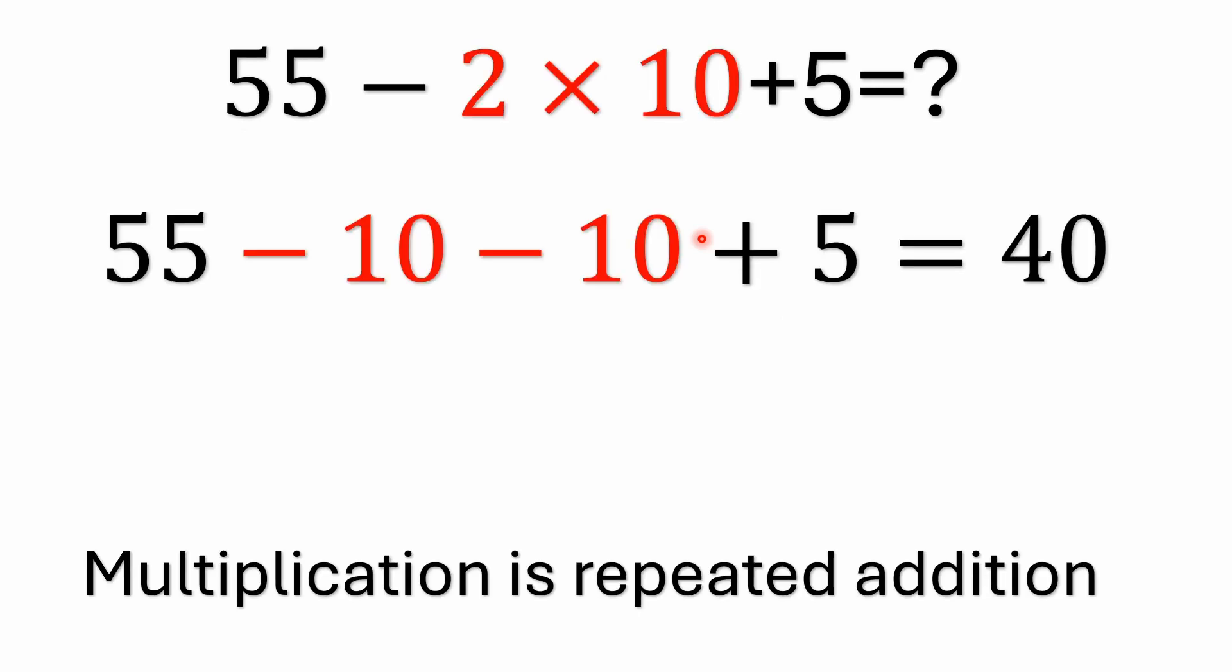Now you could take this problem and substitute the 2 times 10 right? Minus 2 times 10 is the same as subtracting 10 twice in this case. So minus 2 times 10 is the same as minus 10 minus 10. If you substitute the multiplication with the equivalent addition, and in this case it actually ends up subtraction.